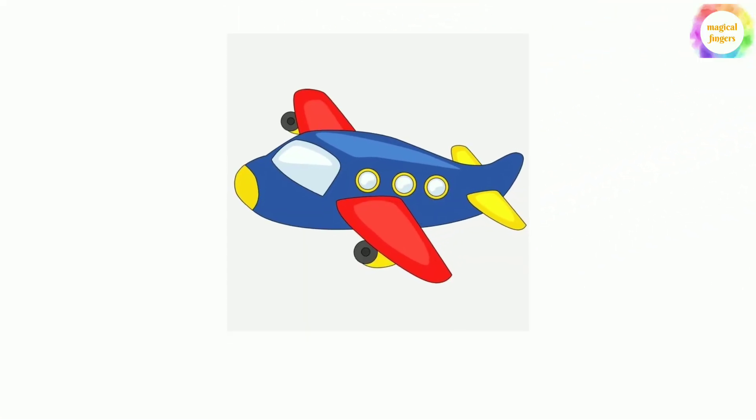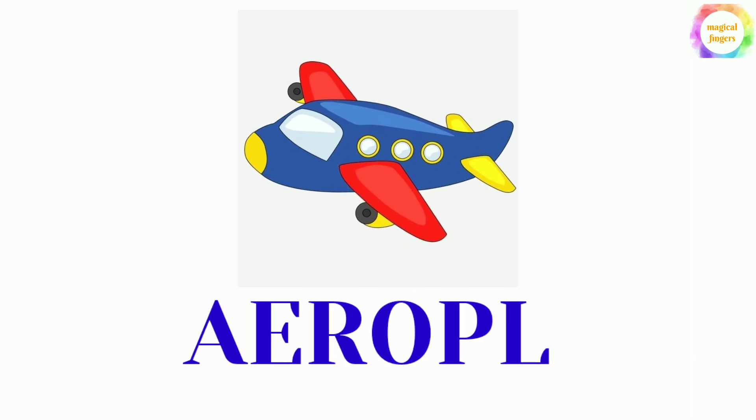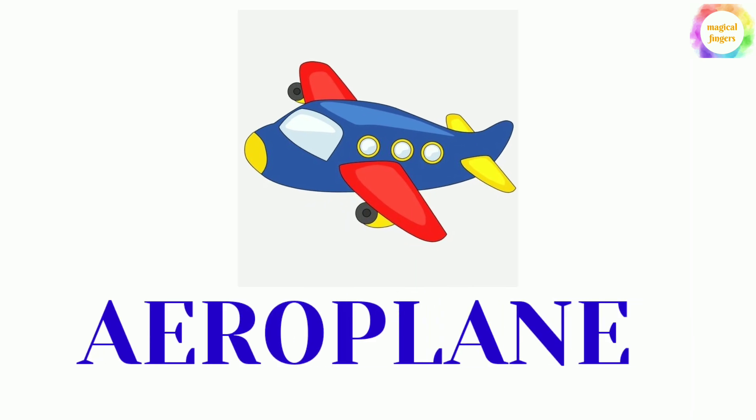And A is for arm. Let's learn their spellings. A-E-R-O-P-L-A-N-E, aeroplane.